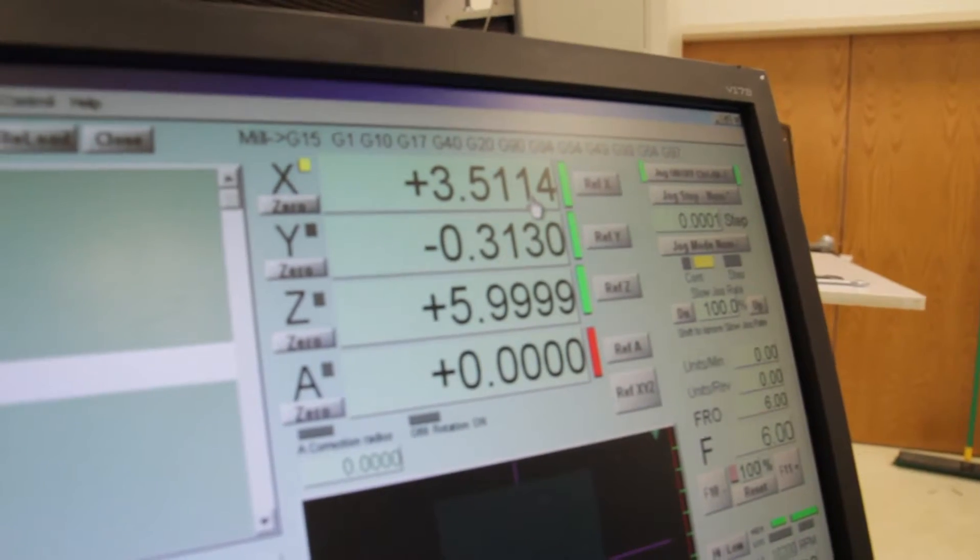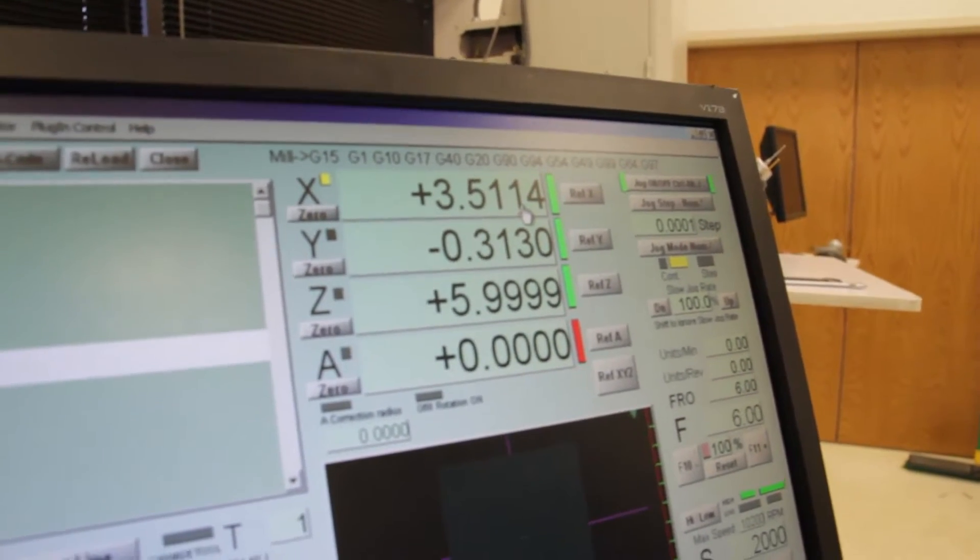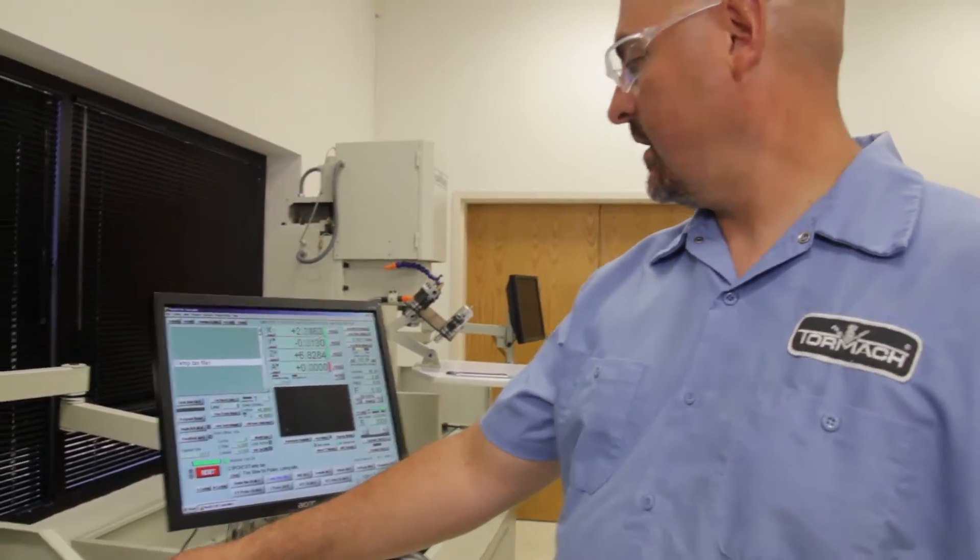Now if we go to zero on our DRO, that'll be the center of our block in X. I'm going to raise the Z and I'll move to the center of the block in X. Then I'll repeat the process for Y.